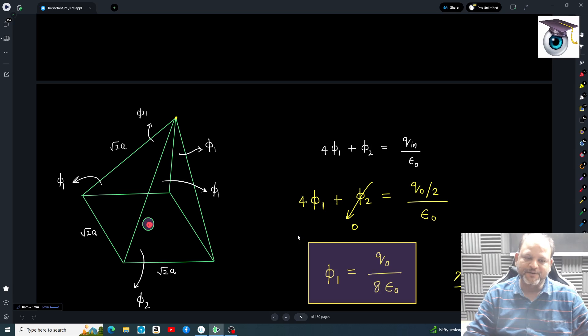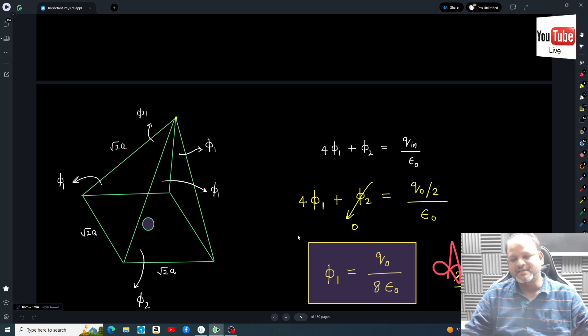Everything will be same as the previous problem, but now it is at this particular point. Due to this charge, this plane is passing through the equator of that charge assuming it's a point charge. So flux through this is zero, φ₂ is going to be zero. And within this pyramid only half of the charge will be inside, so q_in becomes q₀/2. If I simplify I get φ₁ = q/8ε₀. This is the answer for this form.